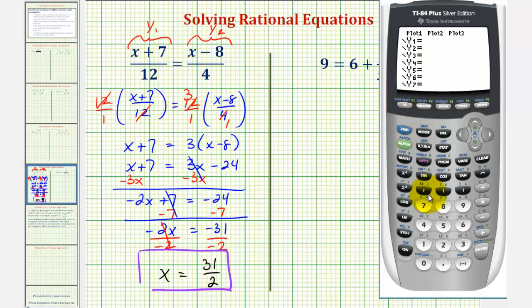Now we'll press y equals. And for y sub 1, we'll have the quantity x plus 7 in parentheses divided by 12, enter. Y sub 2 will be the quantity x minus 8 in parentheses divided by 4. Now the x-coordinate of the point of intersection is going to be 15.5, so we can't use the standard window. Notice if we try to by pressing zoom 6, we won't see the point of intersection.